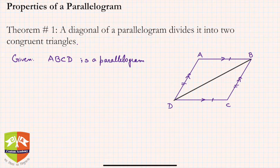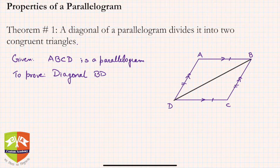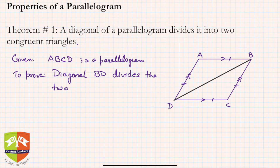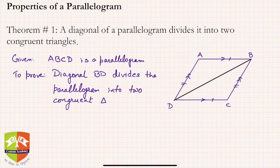We have to prove that triangle ADB is congruent to triangle CBD. Let's do it methodically. Given: ABCD is a parallelogram. To prove: diagonal BD divides the parallelogram into two congruent triangles.